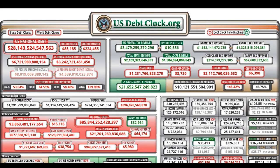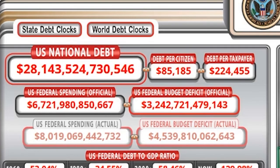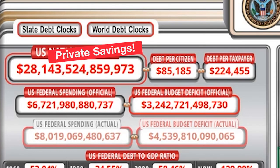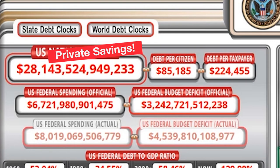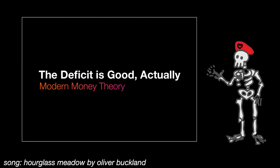Let's go back to that debt clock website. $28 trillion national debt? Flip that frown upside down — that's a $28 trillion surplus for the private sector. See, the national debt is good, actually.